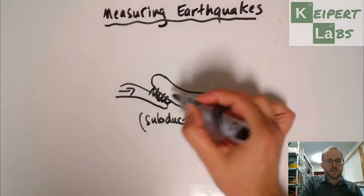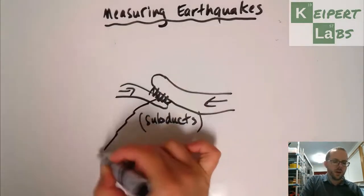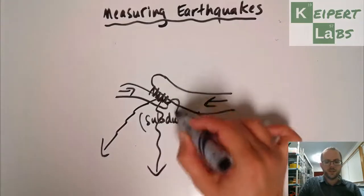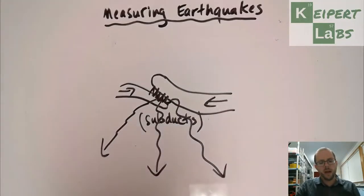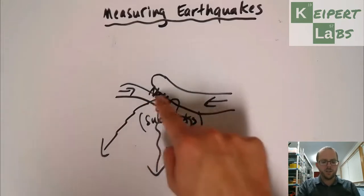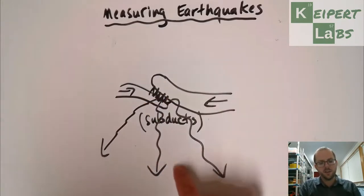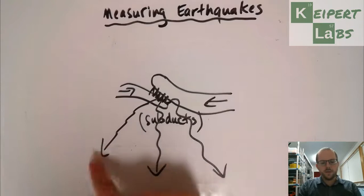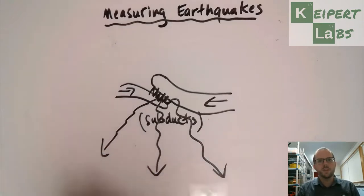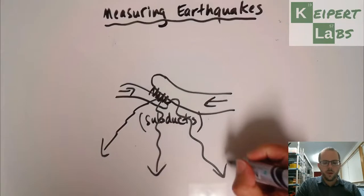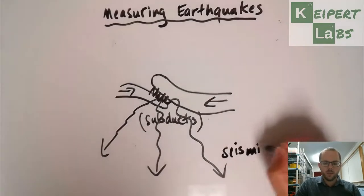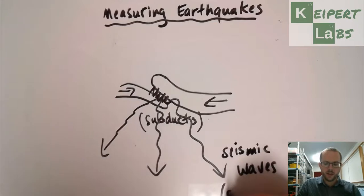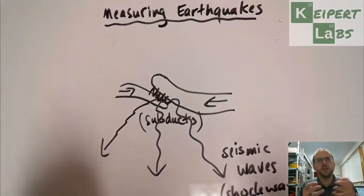What happens then is that we get these shockwaves that get sent out as a result of that movement. Maybe it happens right at the surface or more commonly it happens a bit further down underneath the surface. These shockwaves or this vibration of the earth is what we are measuring, and we call these seismic waves. The idea is that they're like shockwaves from an explosion, like some TNT or dynamite that causes ripples in the air or in the ground as well.